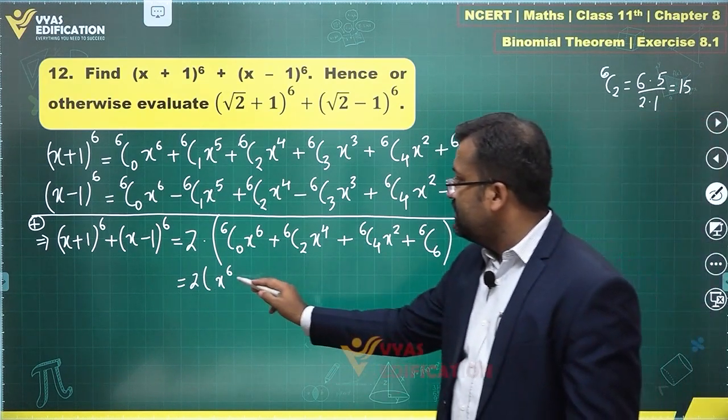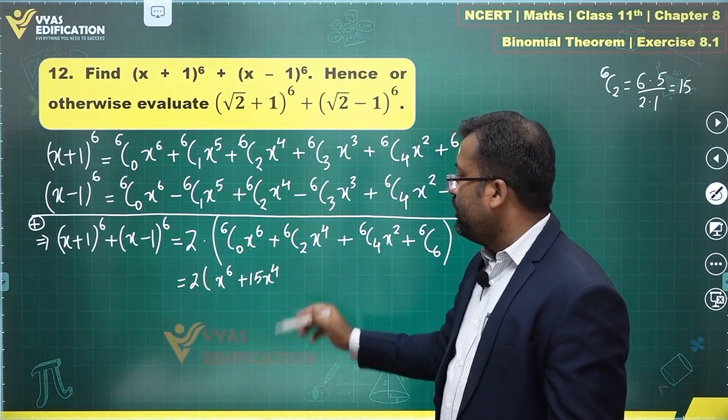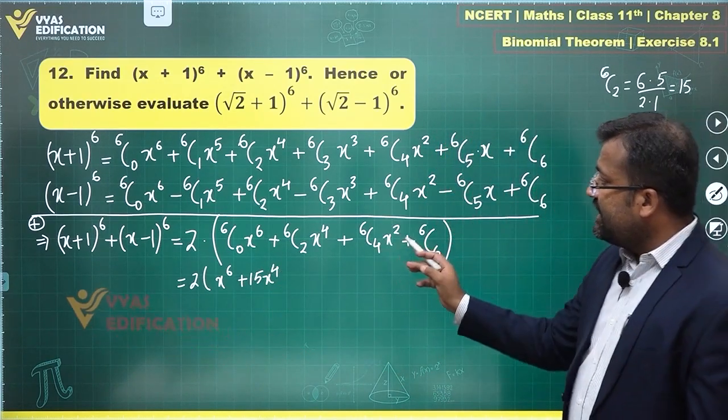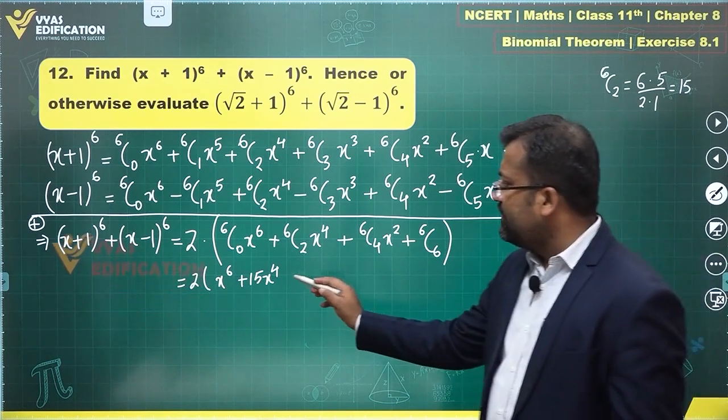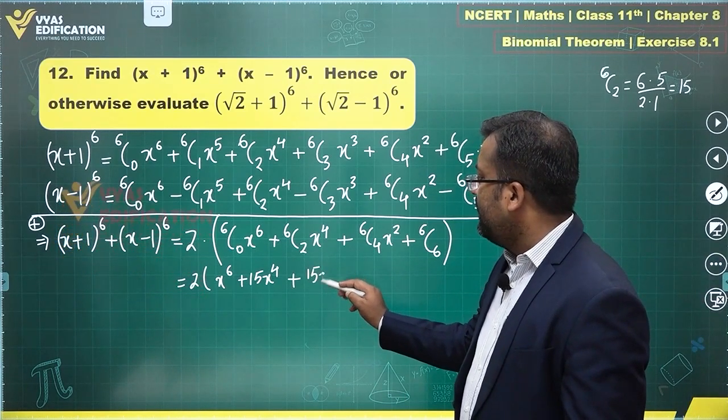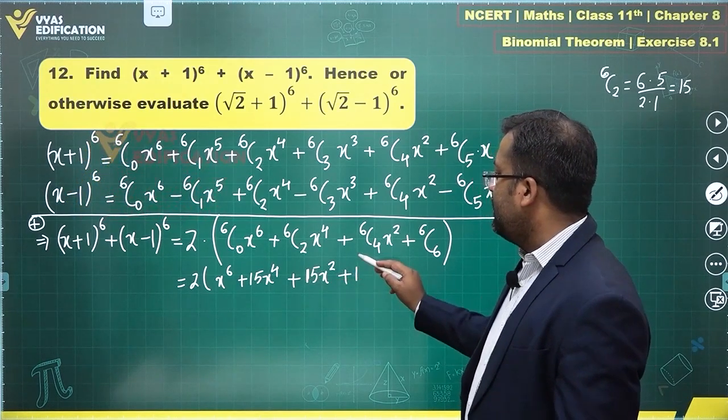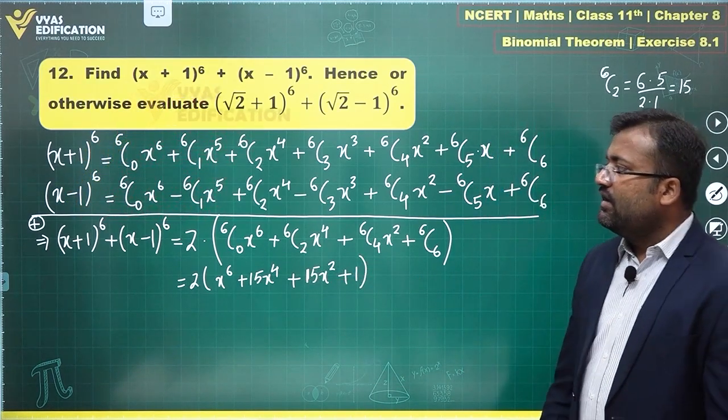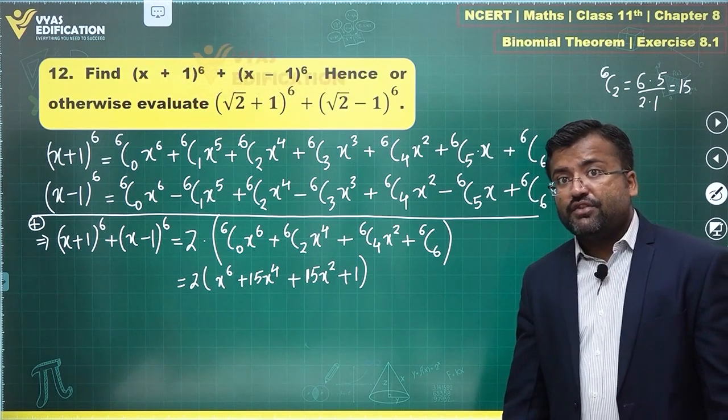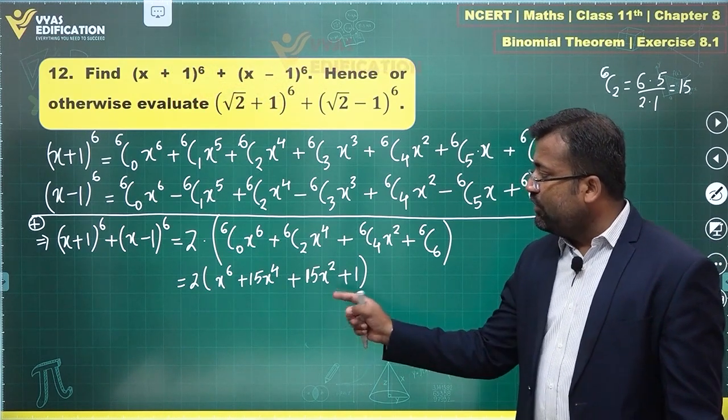So this is 15x^4. What next? 6C4 is same as 6C2. This will again be 15 and you will have x^2. 6C6 is 1. This is what you get. So the sum of (x+1)^6 and (x-1)^6 is equal to this.